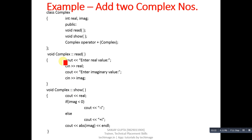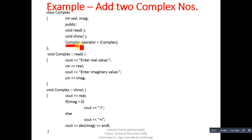This is a complete example written in C++. The class is named 'Complex' and has two attributes: real and imaginary. Three methods are declared: read, show, and operator+. The return type of operator+ is Complex, 'operator' is a keyword, plus is the symbol being overloaded, and one explicit argument of type Complex is passed to this function.